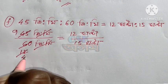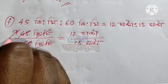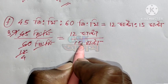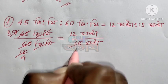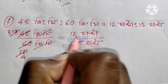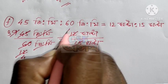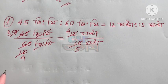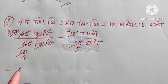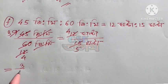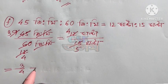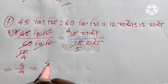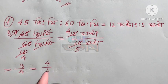If we multiply 3, 3 times 4 equals 12, and 3 times 3 equals 9. If we multiply 3, 3 times 5 equals 15, and 3 times 4 equals 12. So what is the ratio? 3 by 4, or 4 by 5?